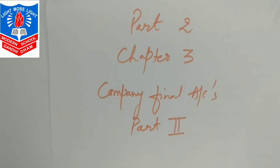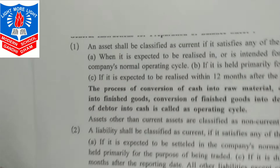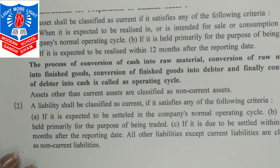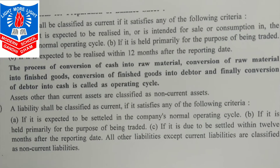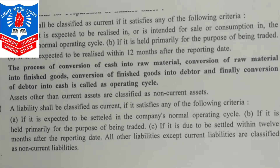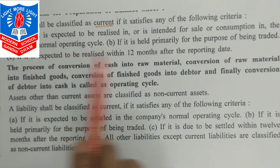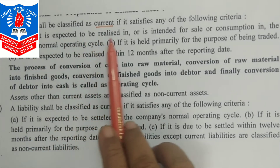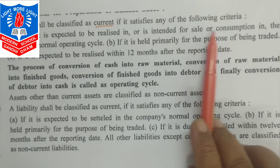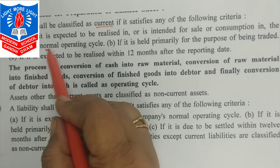Let us start with some important headings and topics. First, about assets — something very important to understand. First is about current assets. The asset shall be classified as a current asset if it satisfies certain criteria — when it is expected to be realized or is intended for sale or consumption in a normal operating cycle.